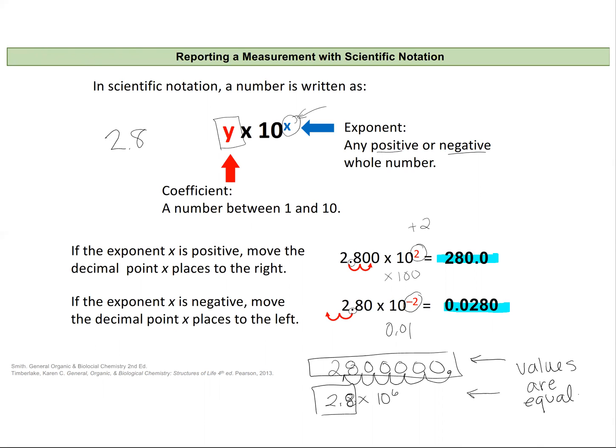A common mistake I see in this class is writing things in scientific notation using the 10 to the exponent correctly, but not getting the coefficient piece correct.